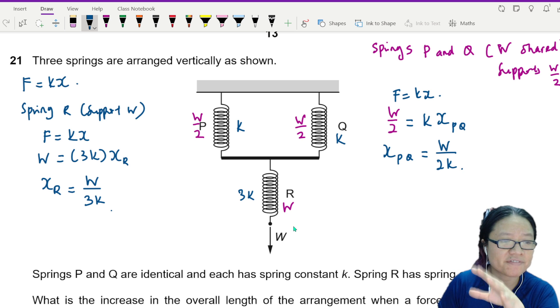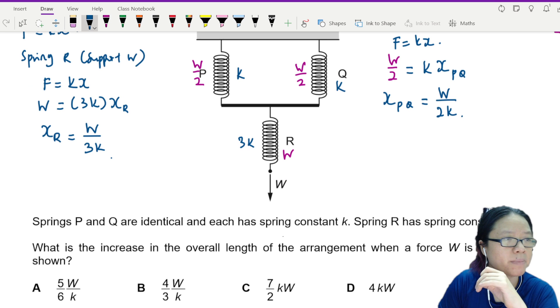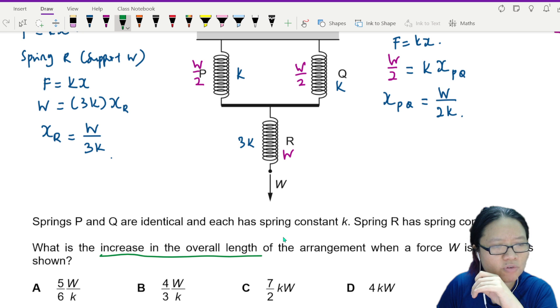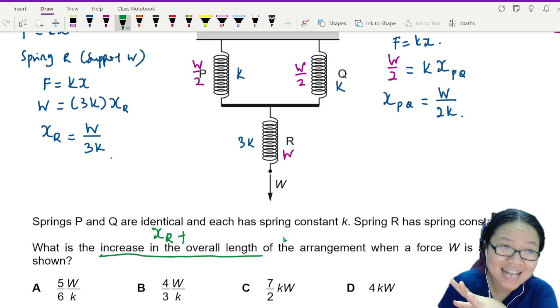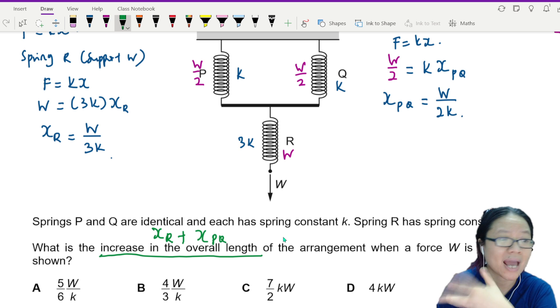So I have, I want to find the total arrangement. I mean the total length increase. What is the increase in the overall length? So this one is the extension of spring R plus the extension of spring PQ. So I add them together. So XR plus XPQ.